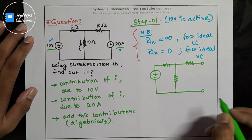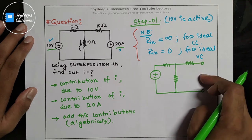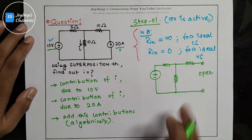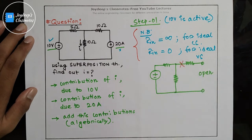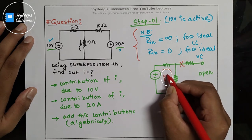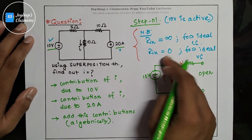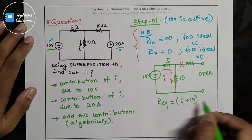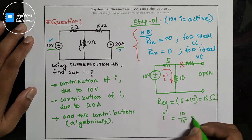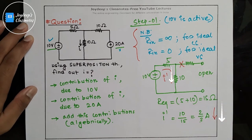So the total current will pass through the series path. Let's name this current I'. The circuit has 10 volts, 5 ohms, and 10 ohms in series. R_equivalent becomes 5 plus 10, which is 15 ohms. So I' equals 10 divided by 15, that means 2/3 amps. The direction of I' is downward.